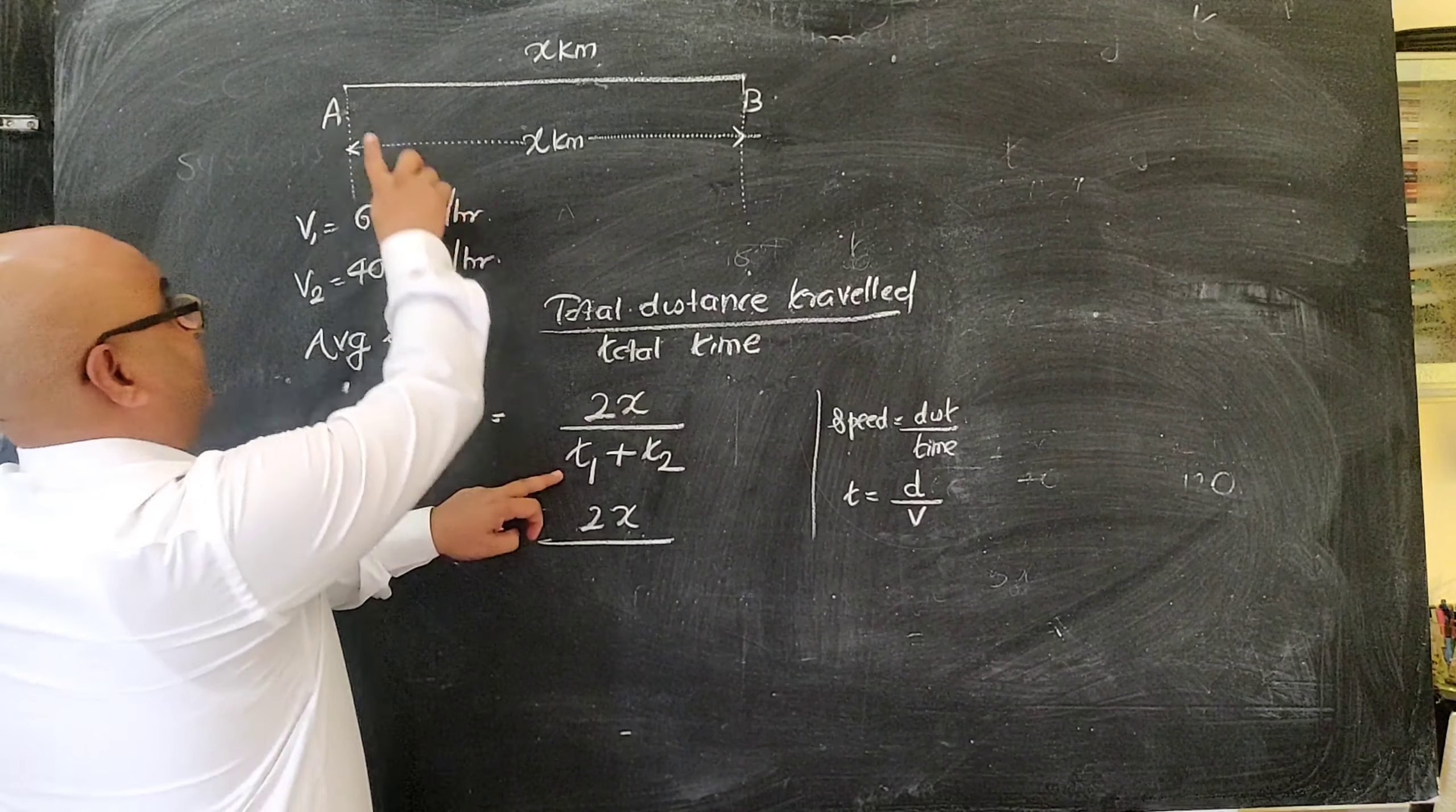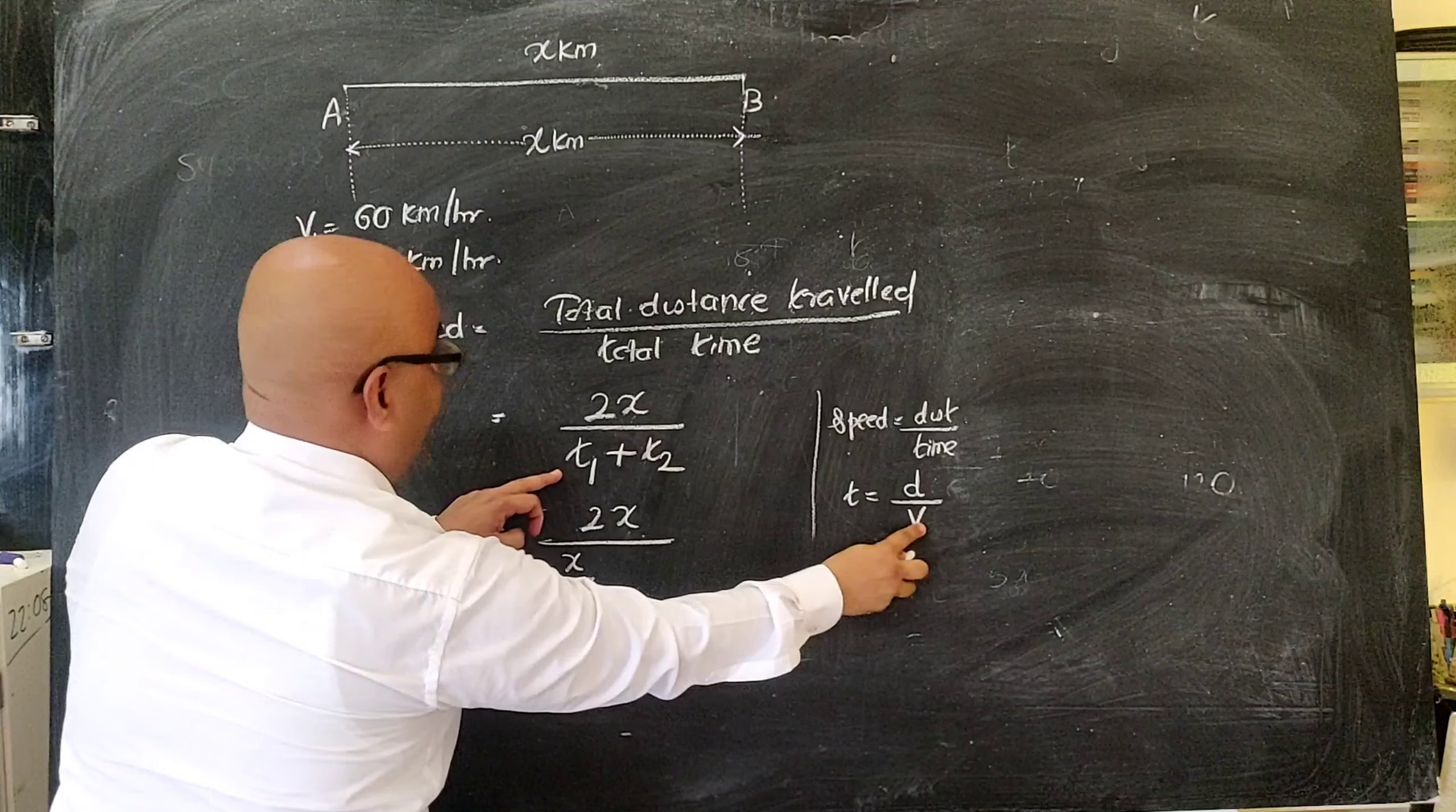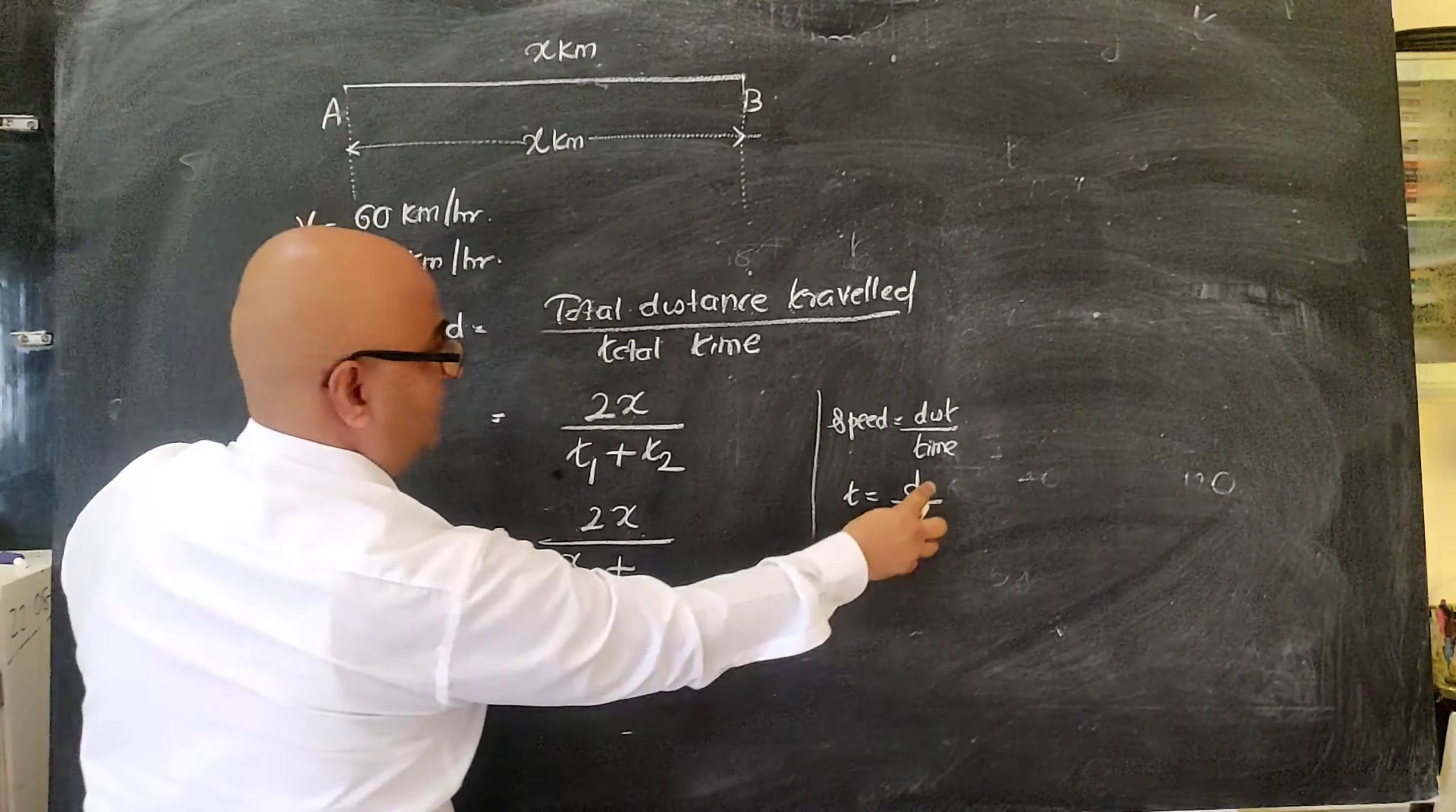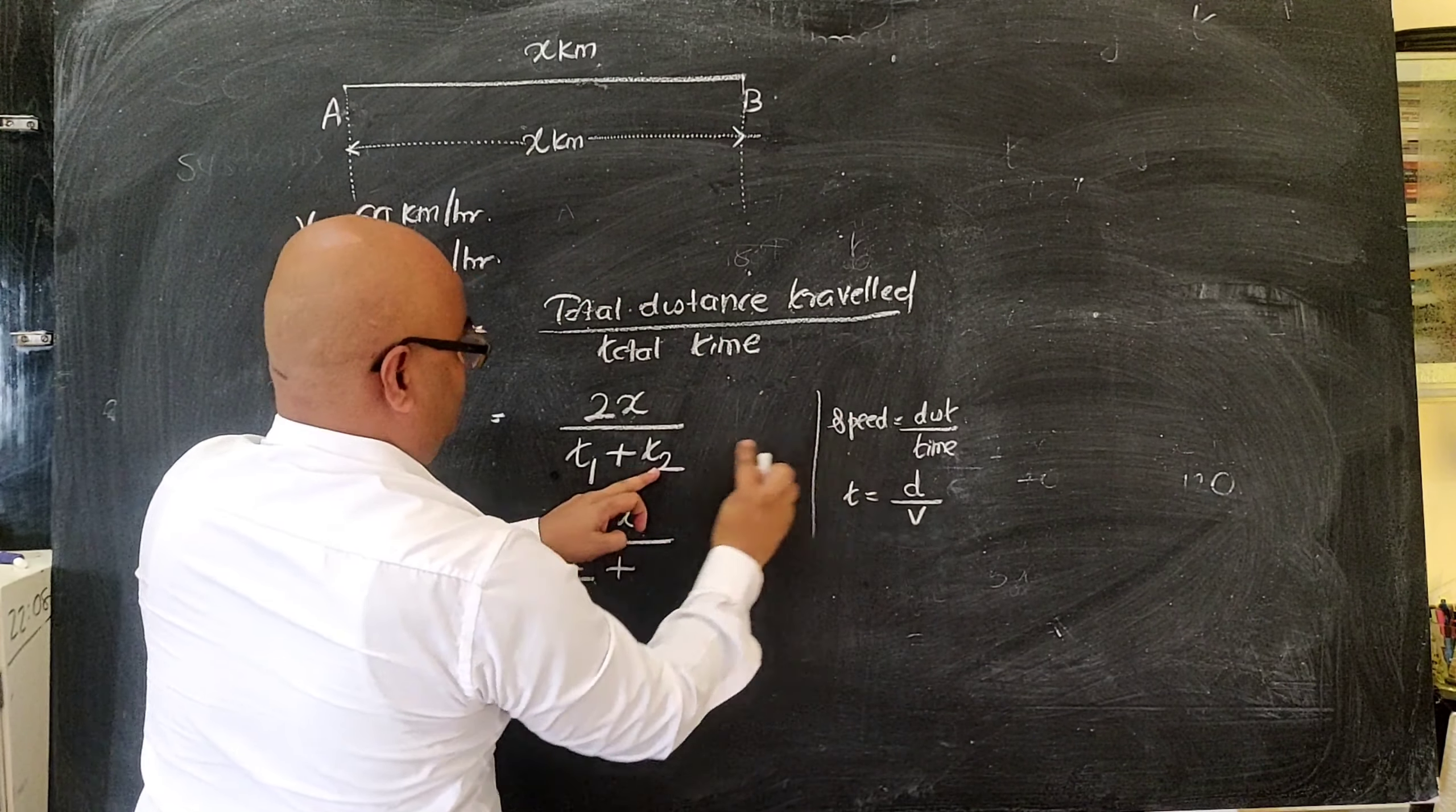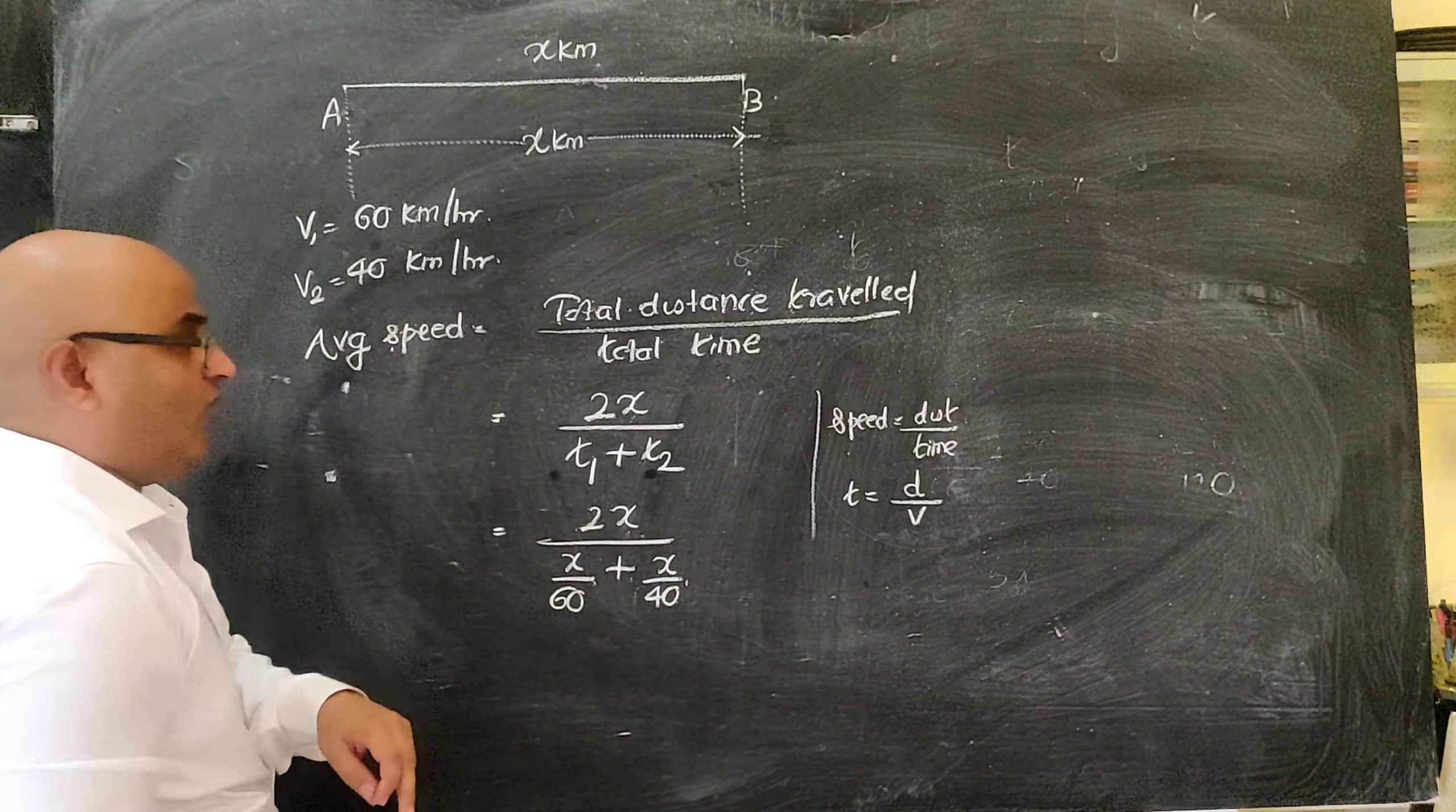So for T1, meaning from A to B, what is distance? x. And what is speed equal to? 60. Plus. Now for T2, meaning from B to A, what is distance? x. And what is the speed equal to? 40.